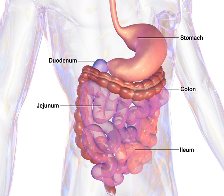The exact demarcation between the upper and lower tracts is the suspensory muscle of the duodenum. This differentiates the embryonic borders between the foregut and midgut, and is also the division commonly used by clinicians to describe gastrointestinal bleeding as being of either upper or lower origin. Upon dissection, the duodenum may appear to be a unified organ, but it is divided into four segments based upon function, location, and internal anatomy. The four segments of the duodenum are: bulb, descending, horizontal, and ascending.